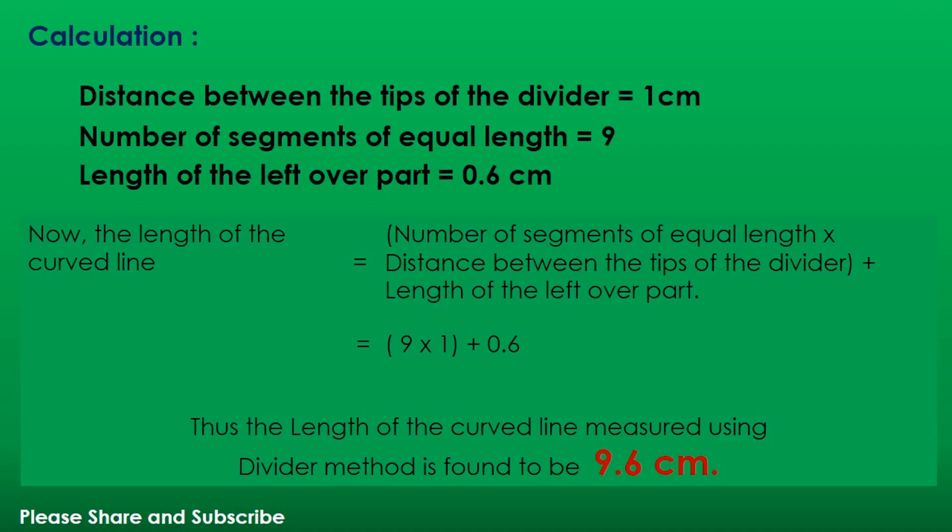The formula to calculate the length of the curved line using the divider method is: number of segments of equal length multiplied by the distance between the tips of the divider, plus the length of the leftover part. The distance between the tips of the divider is 1 centimeter, the number of segments is 9, and the length of the leftover part is 0.6 centimeter. So the length of the curved line is equal to 9 × 1 + 0.6, which equals 9.6 centimeters.